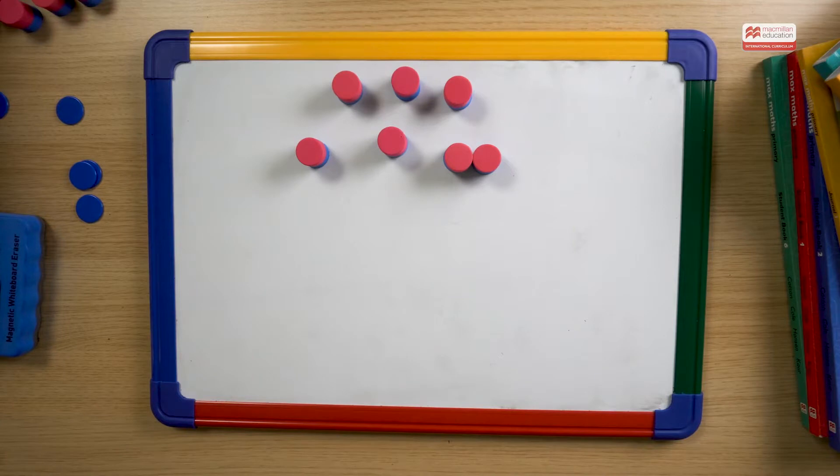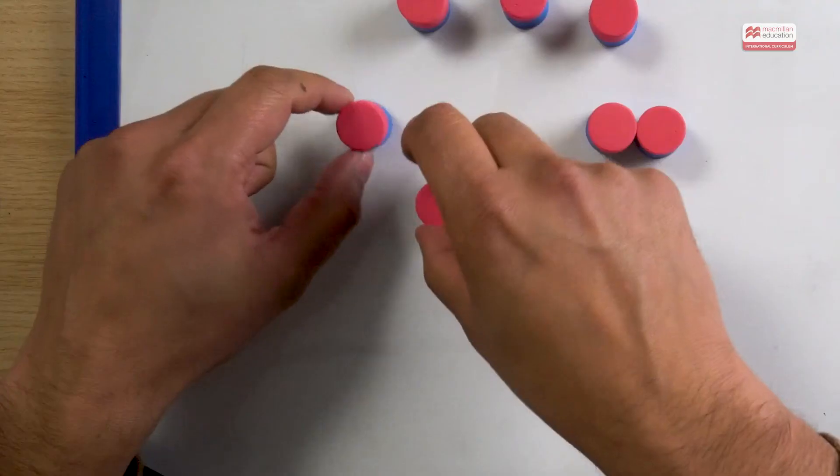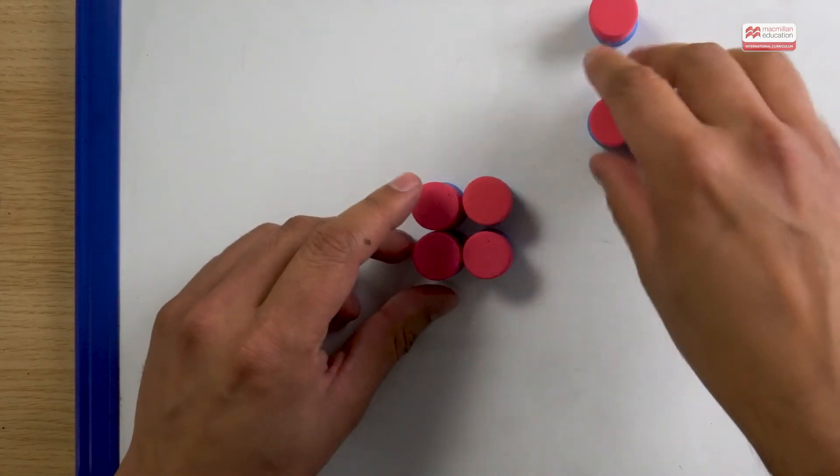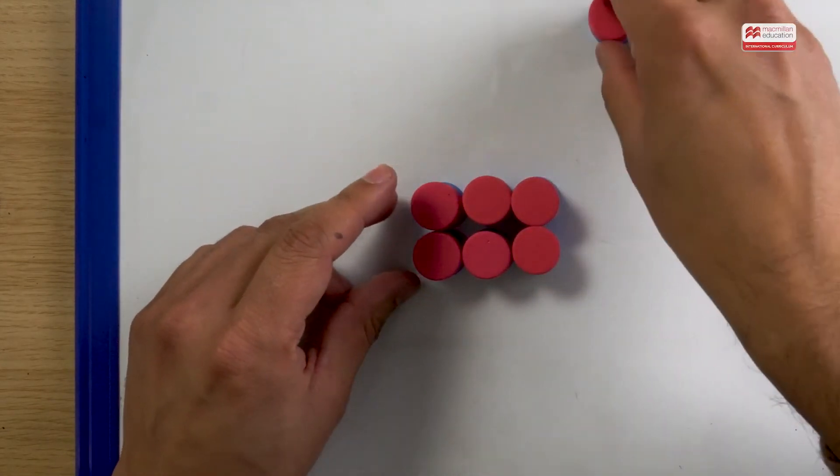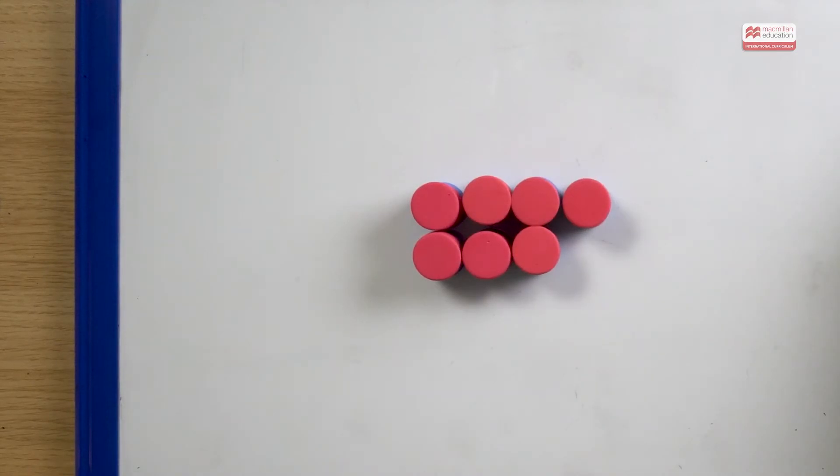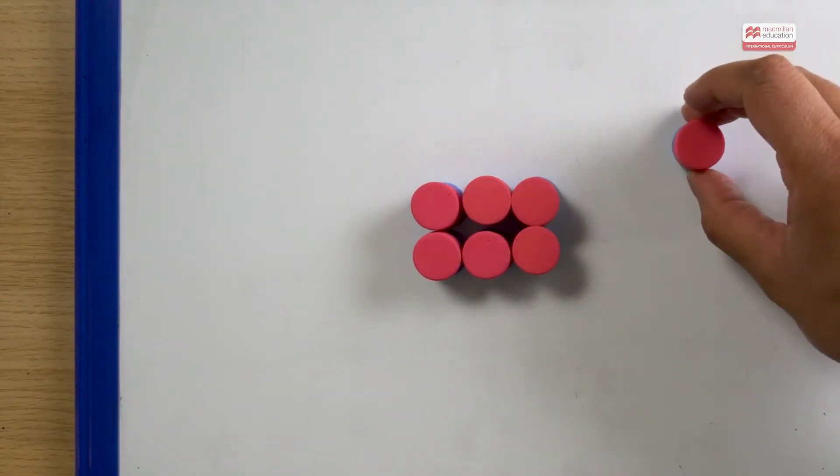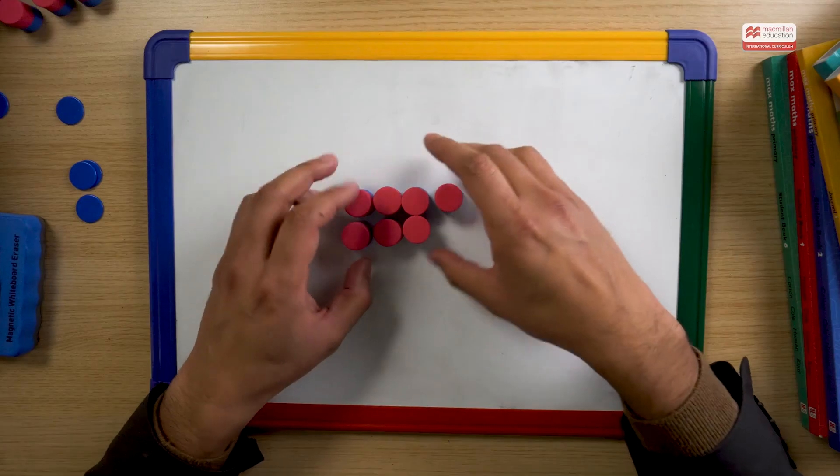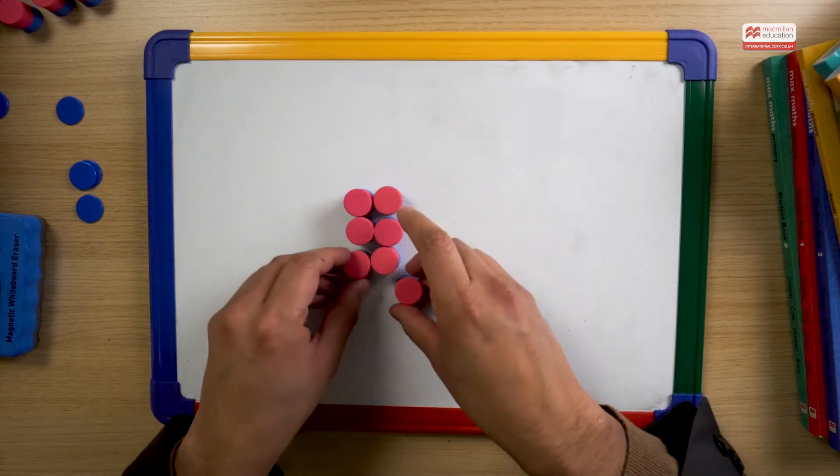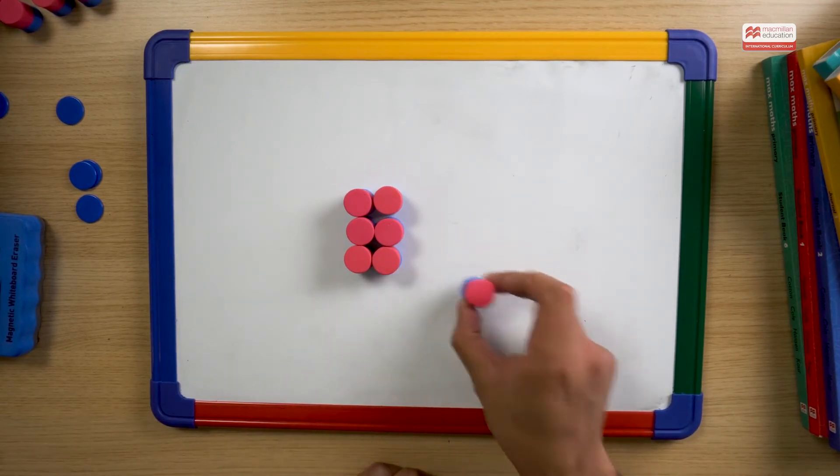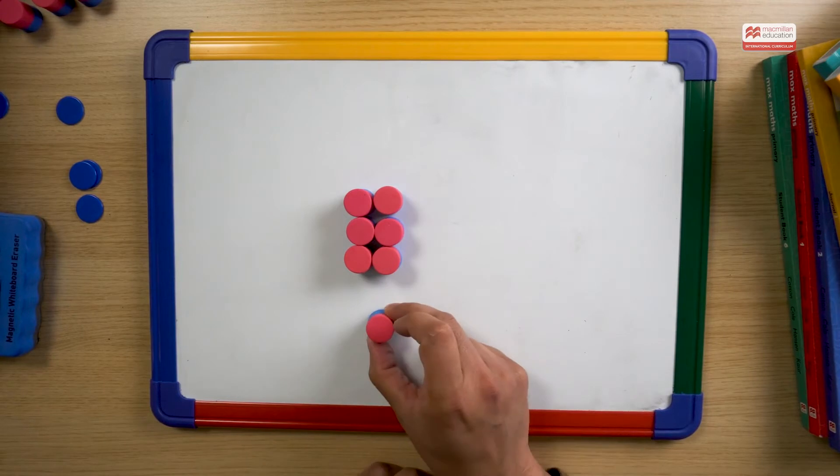And children in the class may start to do something like this. Start to make a rectangle, but then they realize, ah, there's one sticking out. I can't make a rectangle with that one. So maybe I can do it in a different way. Maybe two, something like this. Still one sticking out. How can I do this? There's always one sticking out. There's only seven counters.